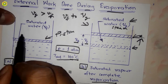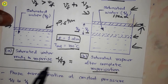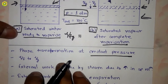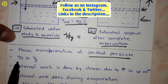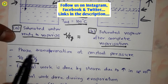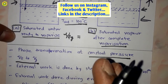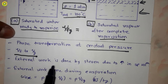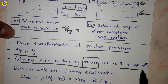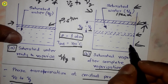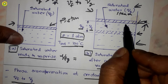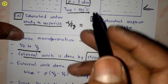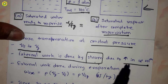The phase transformation from saturated water to saturated steam takes place at constant pressure. During this process, volume increases from vf to vg — from specific volume of moisture to specific volume of dry and saturated steam. The external work is done by the steam due to this increase in specific volume, as the piston moves from its initial position to its final position. This work produced is called the external work done during evaporation.